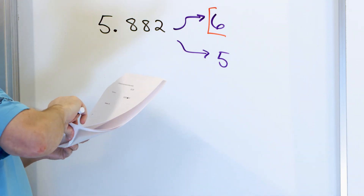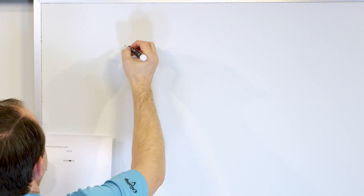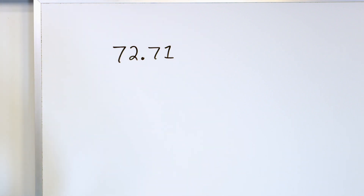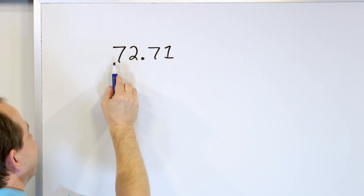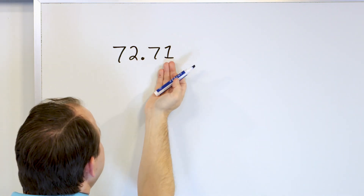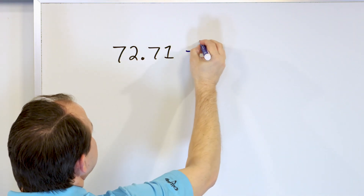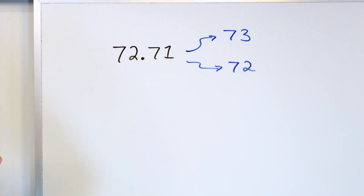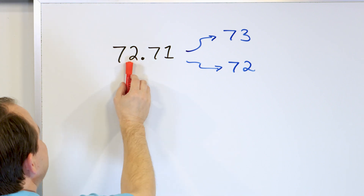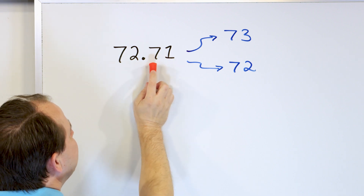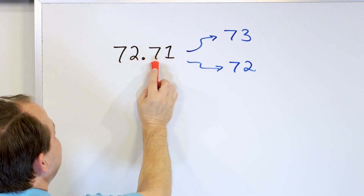Now that we have the hang of it, the remaining problems cruise along — we're doing them all the same way, just getting a little practice. Let's take a look at 72.71. Rounding to the nearest whole number, we can either round up to 73 or round down and stay at 72. We look next door beyond the decimal — it's a 7. We only care about that digit in the tenths place.